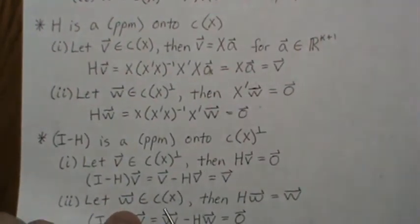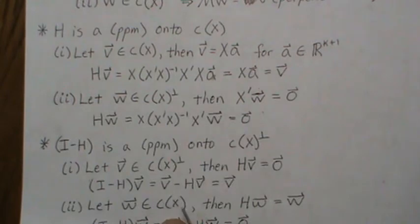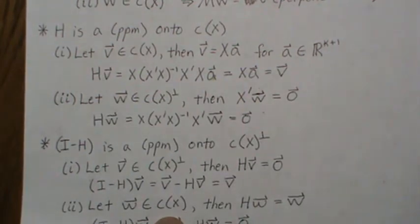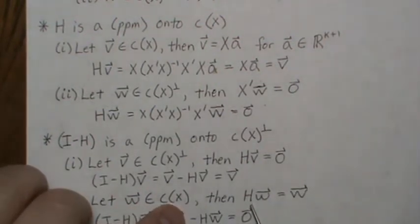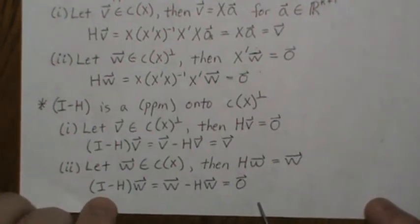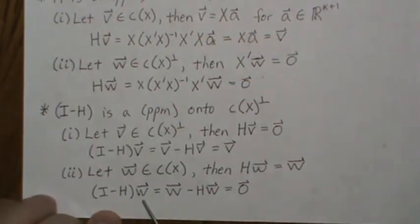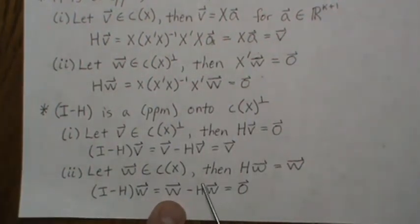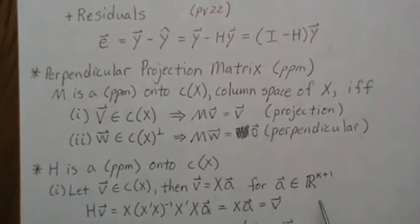Now let w be in the column space of x — the complement of the complement is back to the column space of x. Then hw equals w, since we just showed h is a perpendicular projection matrix on the column space of x, so any vector there pre-multiplied by h gives w back. Then i minus h pre-multiplied to w gives w minus hw, which is w minus w equals zero — satisfying the second property of perpendicular projection matrix.